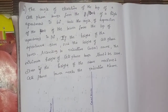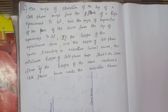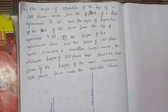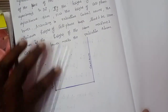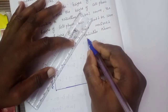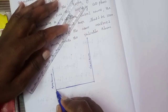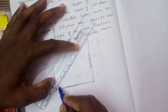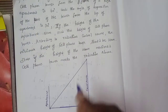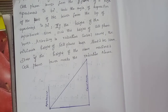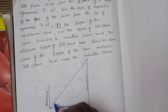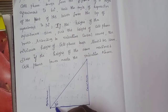The angle of elevation of the top of the cell phone tower from the foot of the high apartment is 60 degrees. So in the cell phone tower top and apartment foot, the angle between them is 60 degrees.